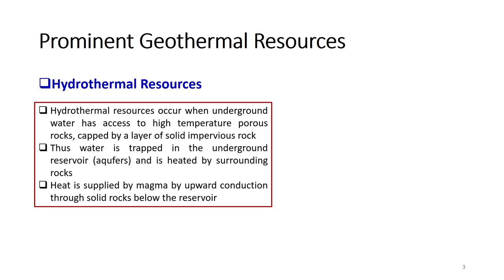Hydrothermal resources occur when underground water has access to high-temperature porous rocks, which are capped by a layer of solid impervious rock. The water is trapped in underground reservoirs known as aquifers and is heated by the surrounding rocks. Heat is supplied by magma and upward conduction through solid rocks below the reservoir.